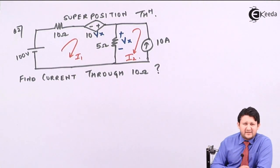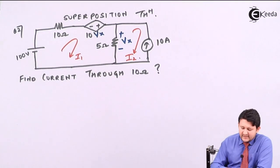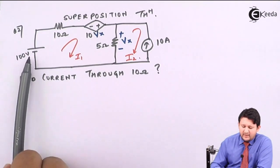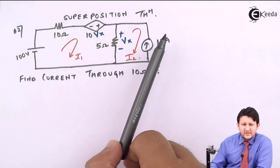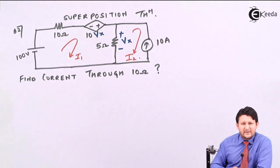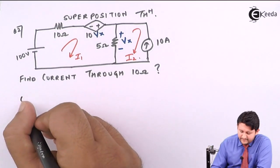That simply tells you, you have to solve by using two cases. In Case 1, you keep the 100V source active. In Case 2, you keep the 10A current source active. So let's solve Case 1 using 100V.